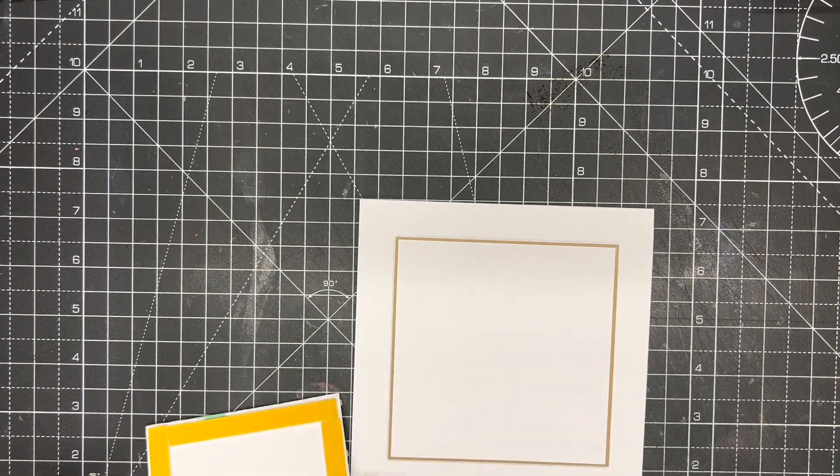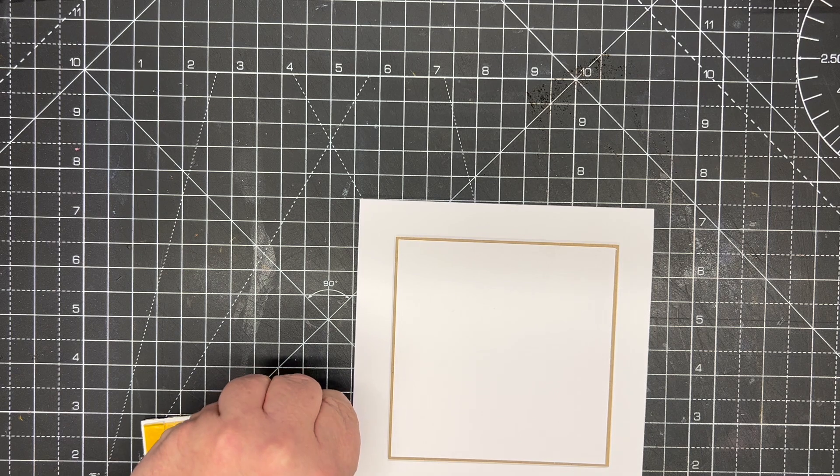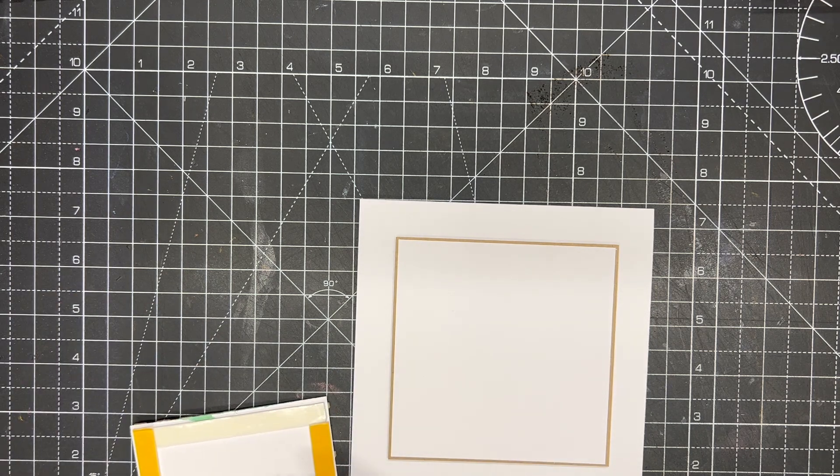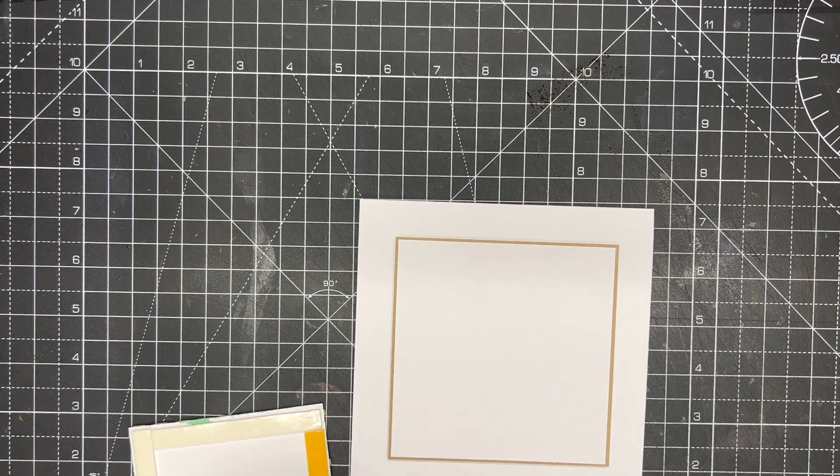With a piece of white at four and three eighths and a piece of craft card to match the same as the fence at four and a half inches.